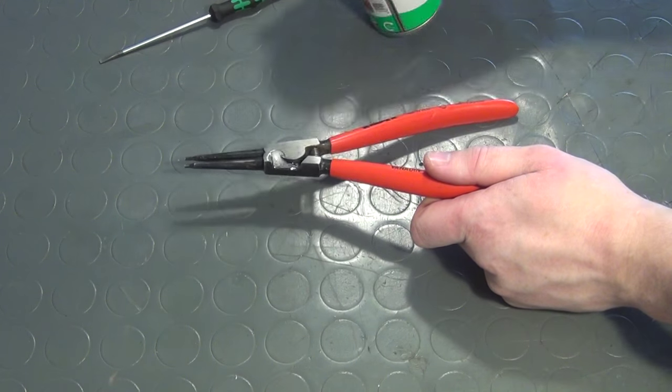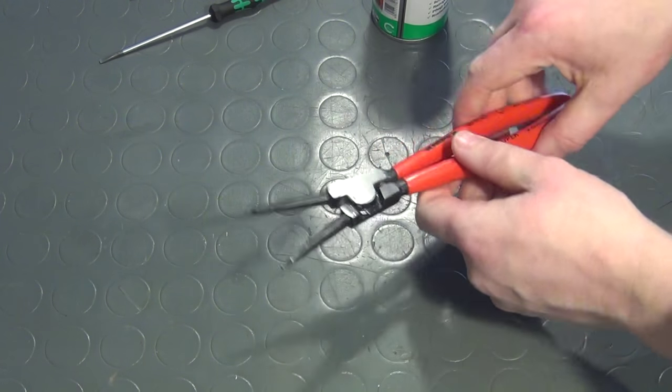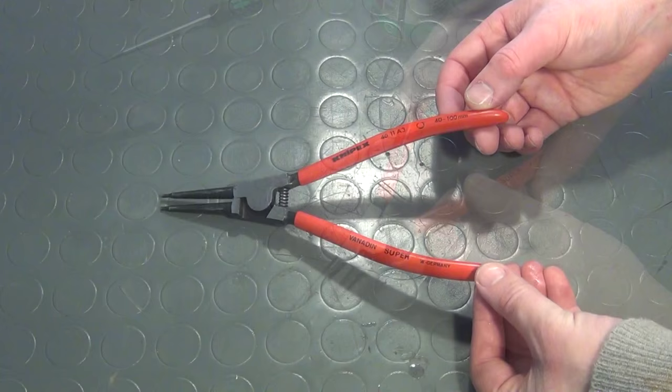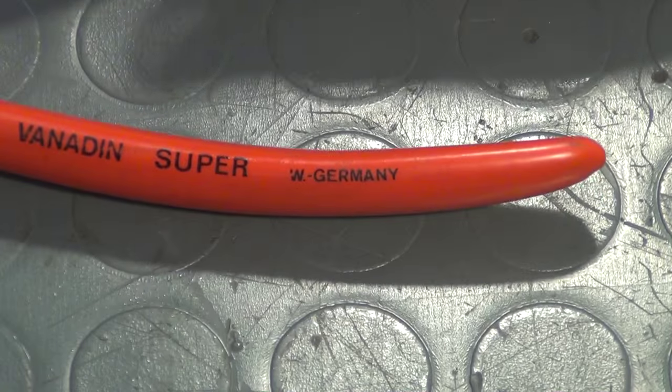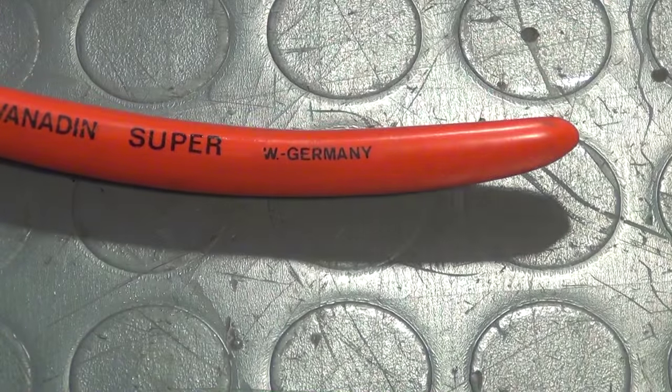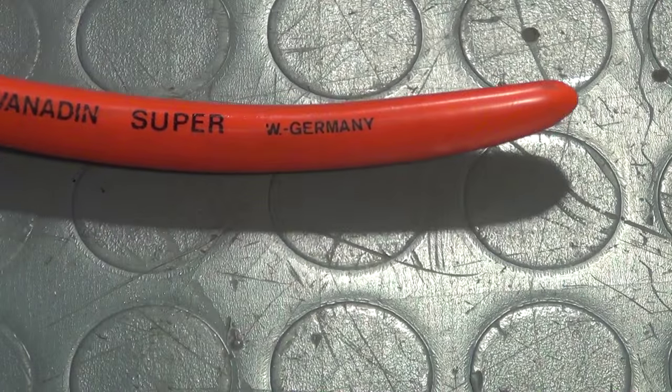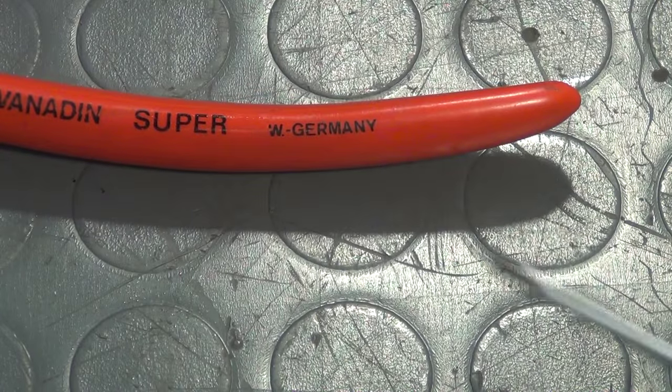By the way, if you have found a tool that says made in W Germany, as in Western Germany, you can be pretty sure that it was manufactured before the reunification of Germany, which took place in 1990. So, I'd say this tool looks pretty new for being at least 25 years old.